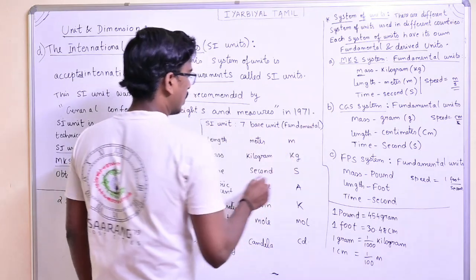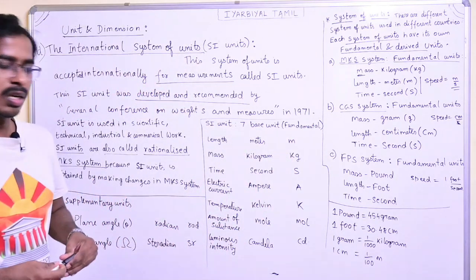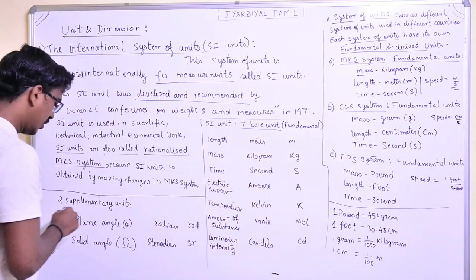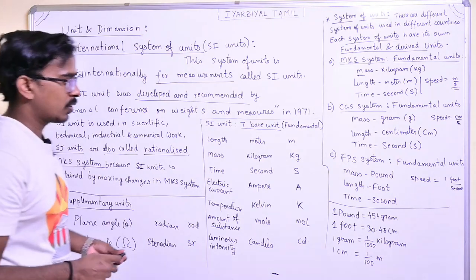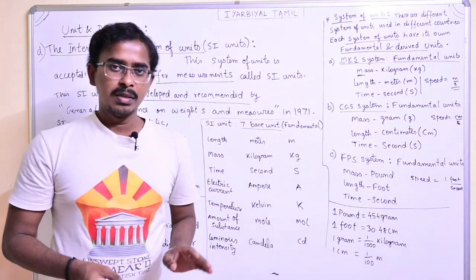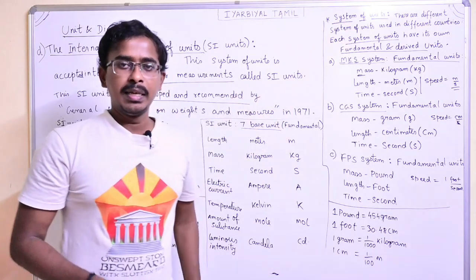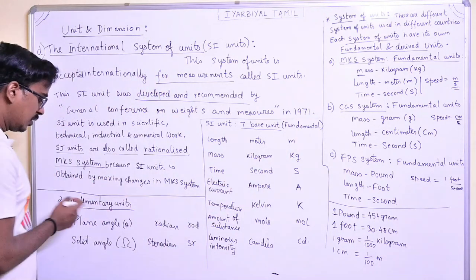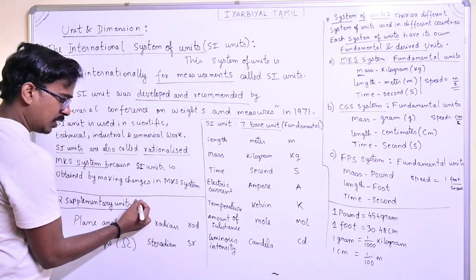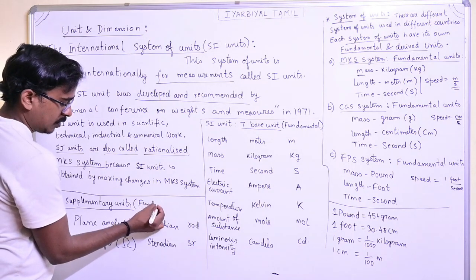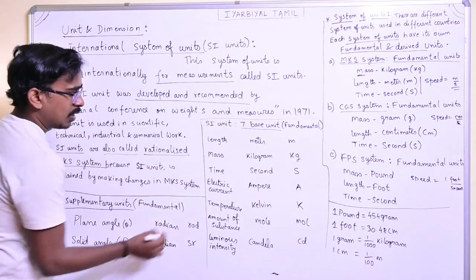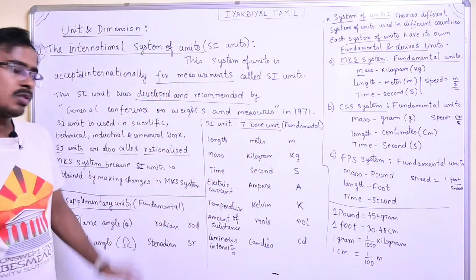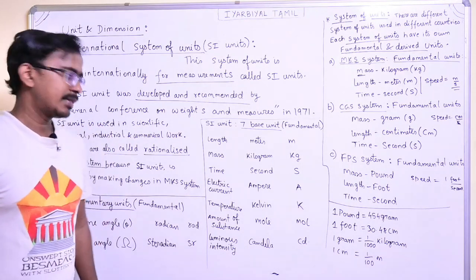In SI units, the fundamental units are a total of 9: 7 base units and 2 supplementary units. In SI units, there are seven base units and two supplementary units.